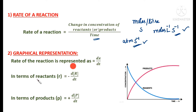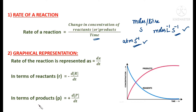When writing the rate of reaction in terms of reactants, the formula is: Rate = −dR/dt. The minus sign is used because the concentration of the reactant is decreasing. In terms of products, the rate of reaction is written as Rate = +dP/dt, with a plus sign because the concentration of the product is increasing as time goes on.